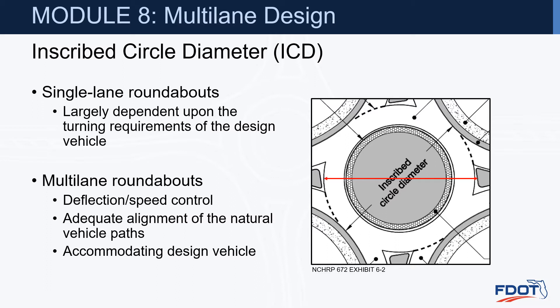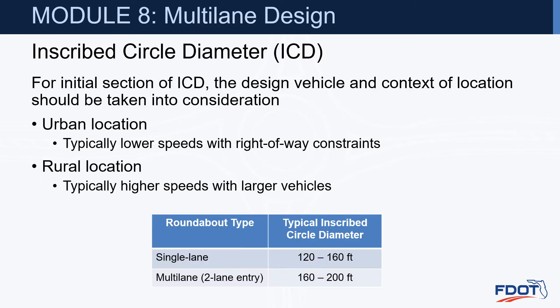Inscribed circle diameter. For single-lane roundabouts, the ICD is largely dependent upon the turning requirements of the design vehicle. Once we get into multilane roundabouts, it becomes about deflection and speed control, adequate alignment of the natural vehicle path, as well as accommodating the design vehicle. For initial selection of the ICD, the design vehicle and context of location should be considered. Urban locations typically have lower speeds with right-of-way constraints, while rural locations have higher speeds with larger vehicles. For multilane roundabouts, we're looking at the 160 to 200-foot range, with 180 feet being a good place to start.